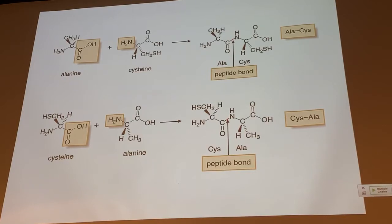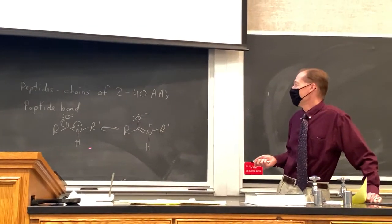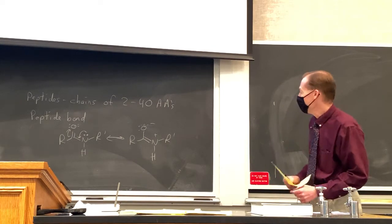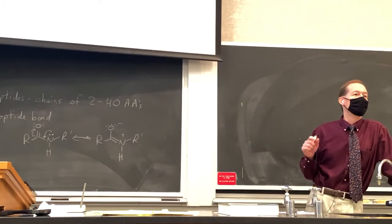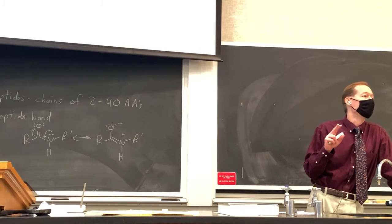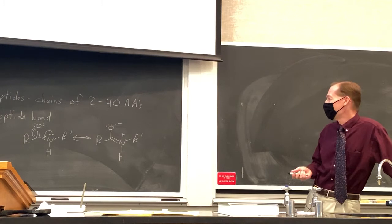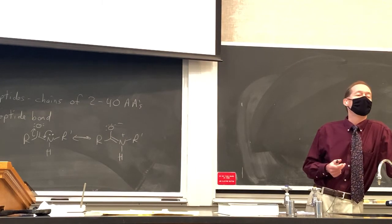Back in chapter 22, when we were learning about carboxylic acids and their derivatives, we talked about the minor contributor where the Z group — which in an amide is a nitrogen — donates electrons to the carbonyl, giving us a particular minor contributor. With amides, this minor contributor contributes more substantially than with other carboxylic acid derivatives, because of the lower electronegativity of nitrogen compared to oxygen or chlorine in acid chlorides. Even though this is still a minor contributor, I would call it a substantial minor contributor.